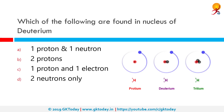Which of the following are found in the nucleus of deuterium? Deuterium is a hydrogen isotope. The correct answer is one proton and one neutron. Deuterium is one of the two stable isotopes of hydrogen. Its nucleus contains one proton and one neutron, whereas the far more common protium — normal hydrogen — has no neutrons, just a proton in its nucleus.